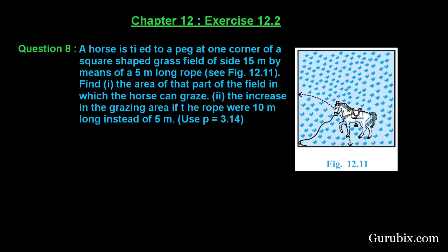Find the area of that part of the field in which the horse can graze, and second, the increase in the grazing area if the rope were 10 meter long instead of 5 meter. This is a very interesting question, let us solve it.